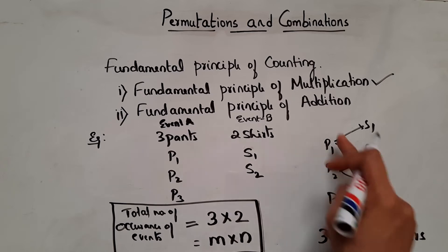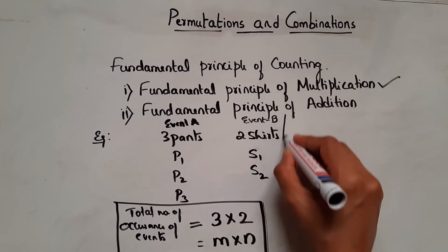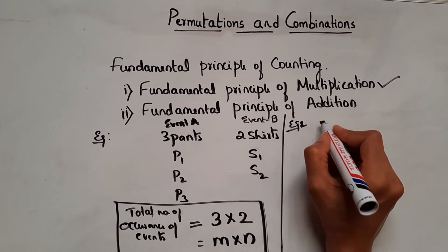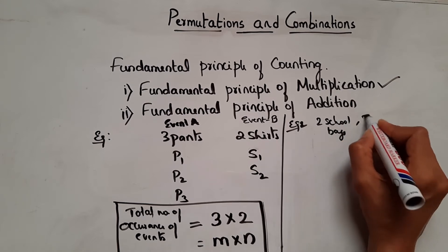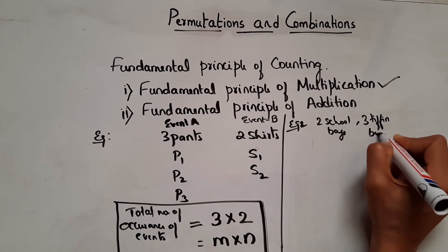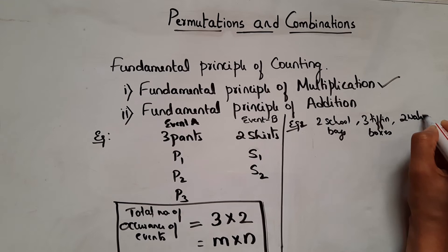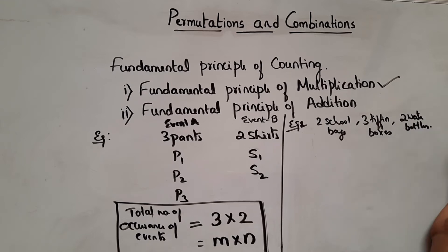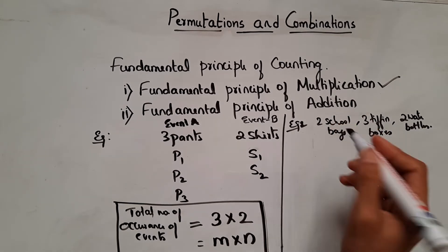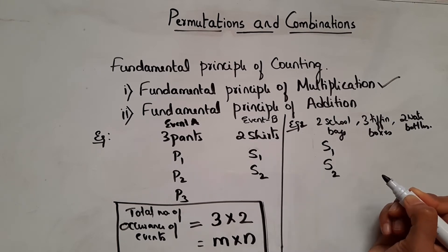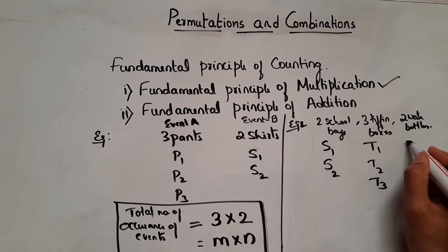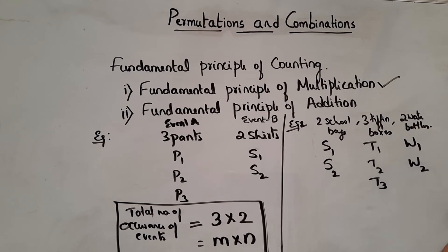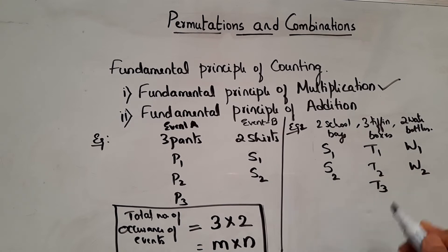So let me give you one more example. Let's say Shabnam has 2 school bags, 3 tiffin boxes, and 2 water bottles. In how many ways can she carry these items, choosing 1 each? So let's take the school bags as S1 and S2, tiffin boxes as T1, T2 and T3, and water bottles as W1 and W2.